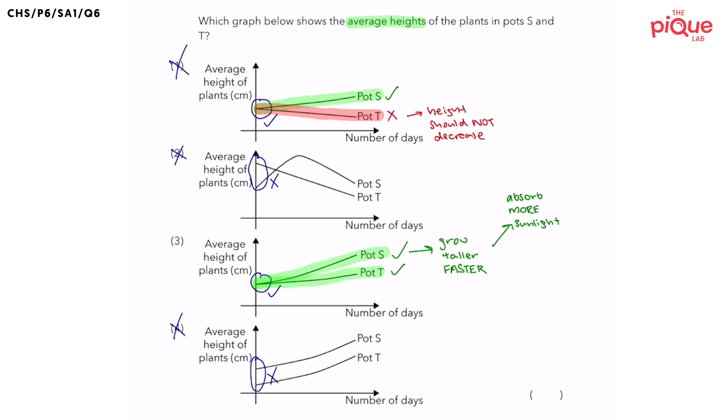Now, if the plants were trying so hard to absorb more sunlight, do you think that they had plenty and sufficient sunlight to begin with? Probably not. So this tells us that there is actually more competition for sunlight among the plants in pot S.